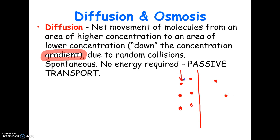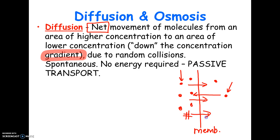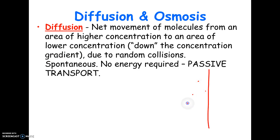Let's say this is a solute particle able to pass through the membrane. It will tend to go toward the side with less. Particles from the other side can also cross, but notice the word 'net.' Net movement means overall — if we add how many are going each way — the net movement will be toward the side with less, because the chances of one hitting from the high-concentration side are much higher.